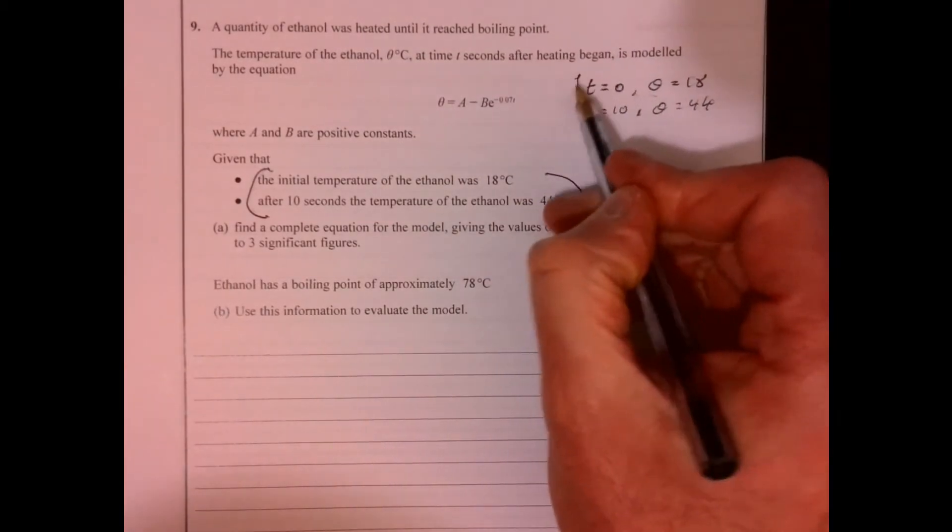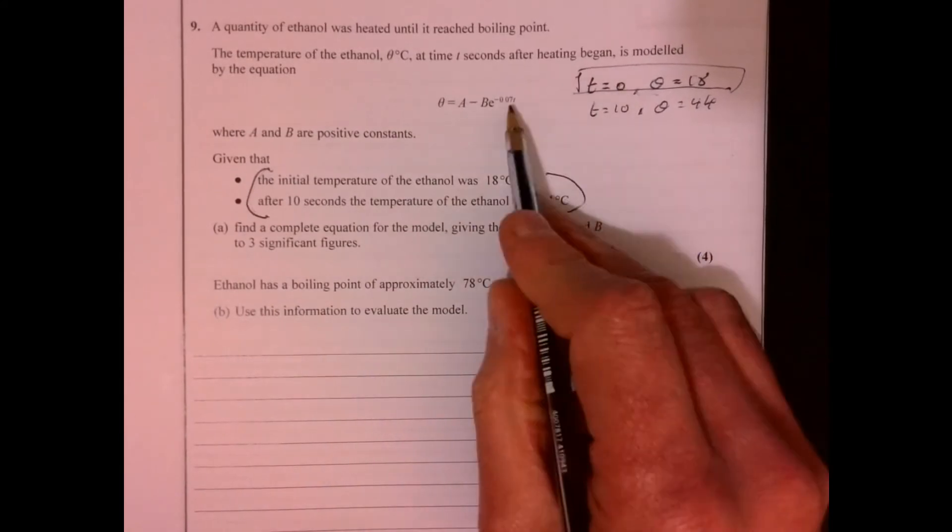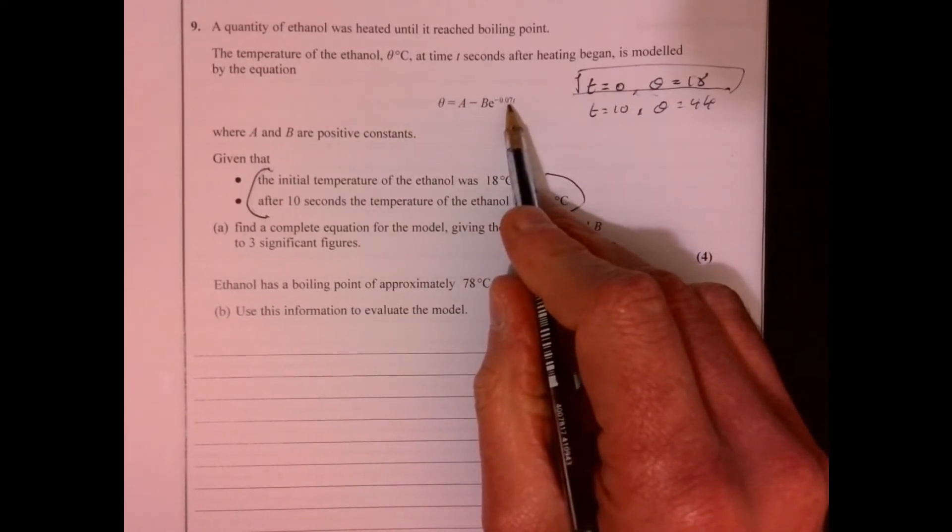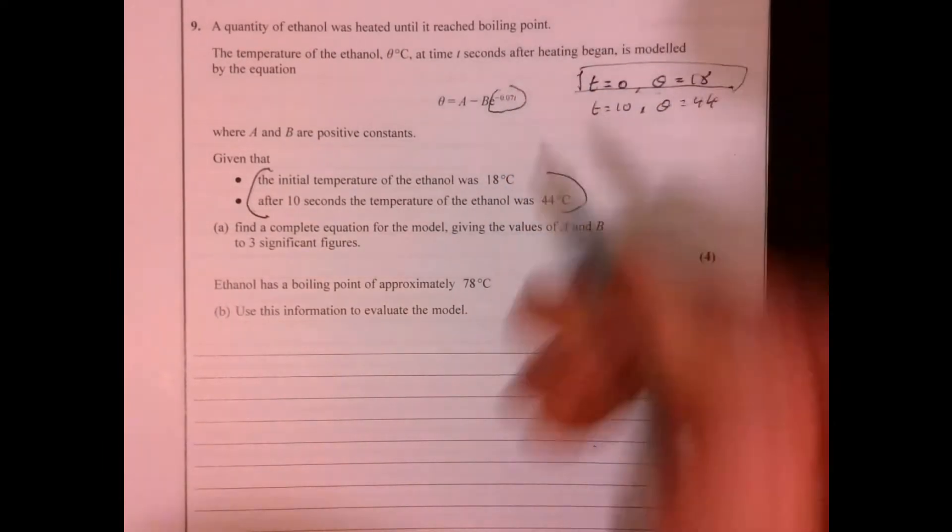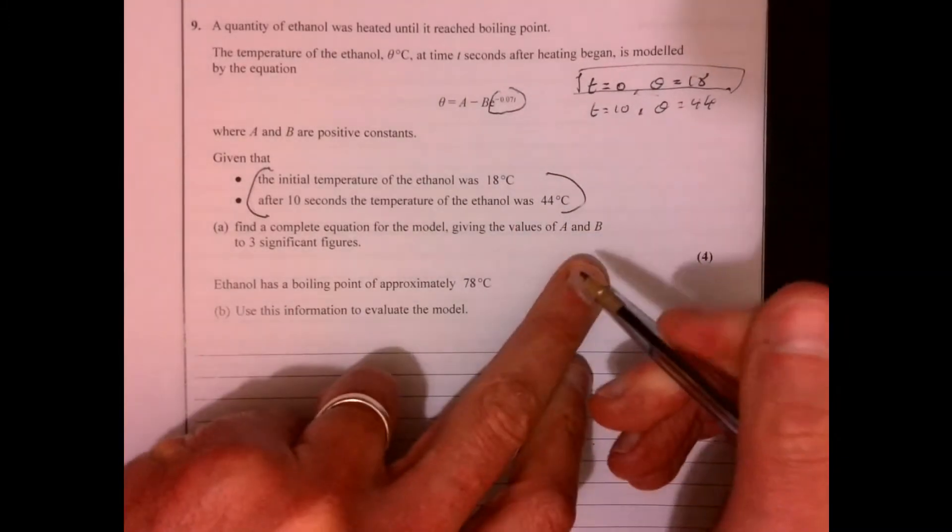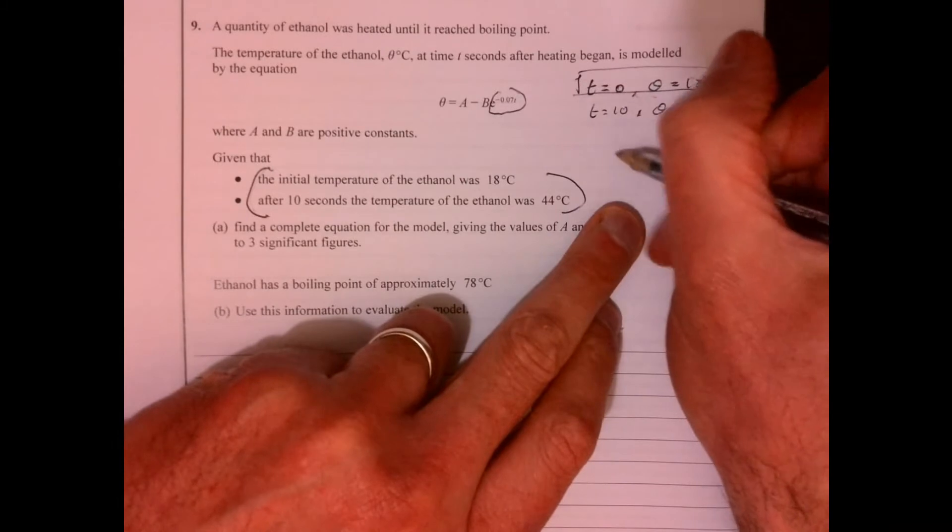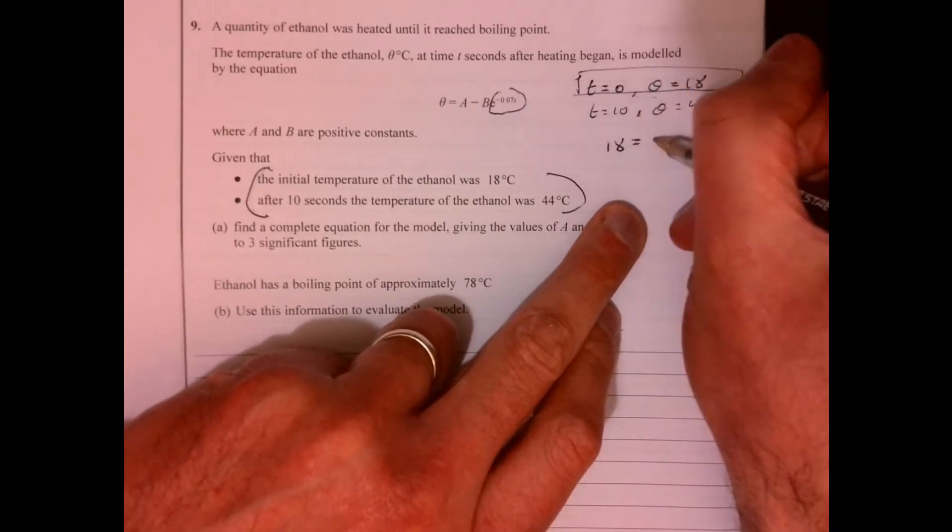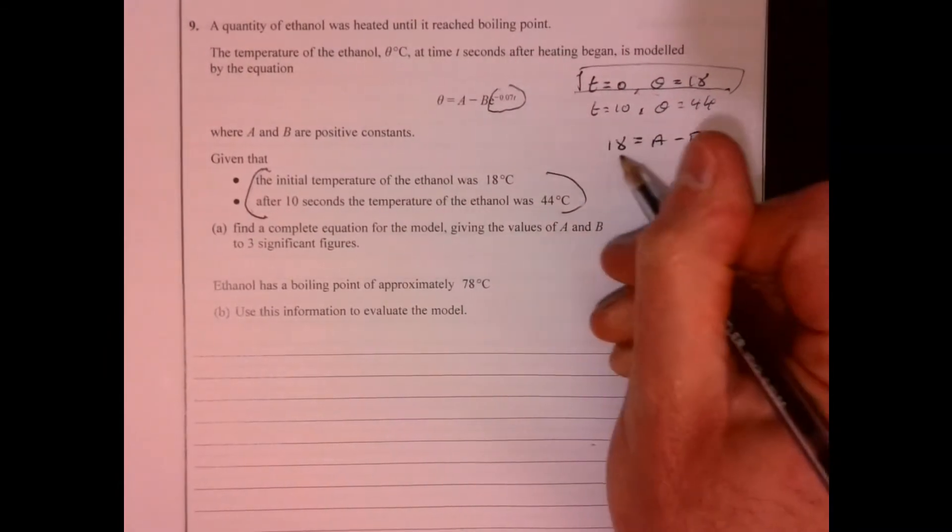So let's think about this one first of all. What does that give us? Well, if T is zero, then this bit here would have to be one, wouldn't it? Because anything to the power of zero is one. So therefore, that's going to give me 18 equals A minus B. So that's really quite handy.